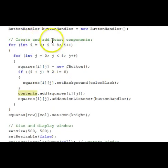Here we create and add the board components. It's a two-dimensional array. We have a nested for loop. The outer loop, using i as the loop control variable, goes zero, less than 8, bumping by 1.